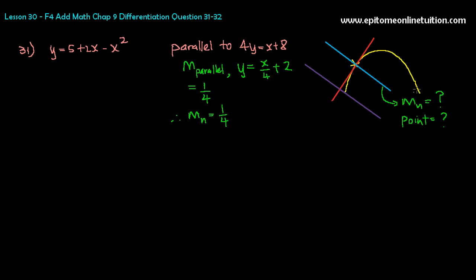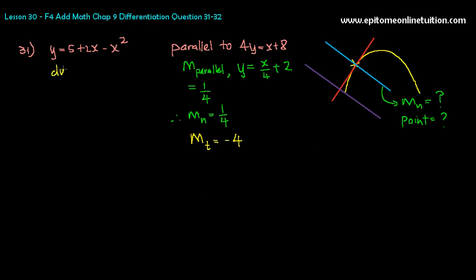Now you need to find the coordinates, so you're going to work backwards. You have the curve and the gradient of the normal. In order to find the point, you will need to find dy/dx, and dy/dx equals the gradient of the tangent. The gradient of the tangent would be the negative reciprocal of the normal, which is negative 4. Remember, inverse the number and inverse the sign. So dy/dx is equal to negative 4.